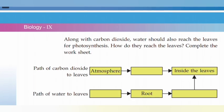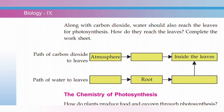Along with carbon dioxide, water should also reach the leaves for photosynthesis. Carbon dioxide from the atmosphere is absorbed by plants. There is a structure called stomata — a micro pore. Carbon dioxide from the atmosphere enters through the stomata into the leaves. The path of carbon dioxide to leaves is: atmosphere, then stomata, then inside the leaves.